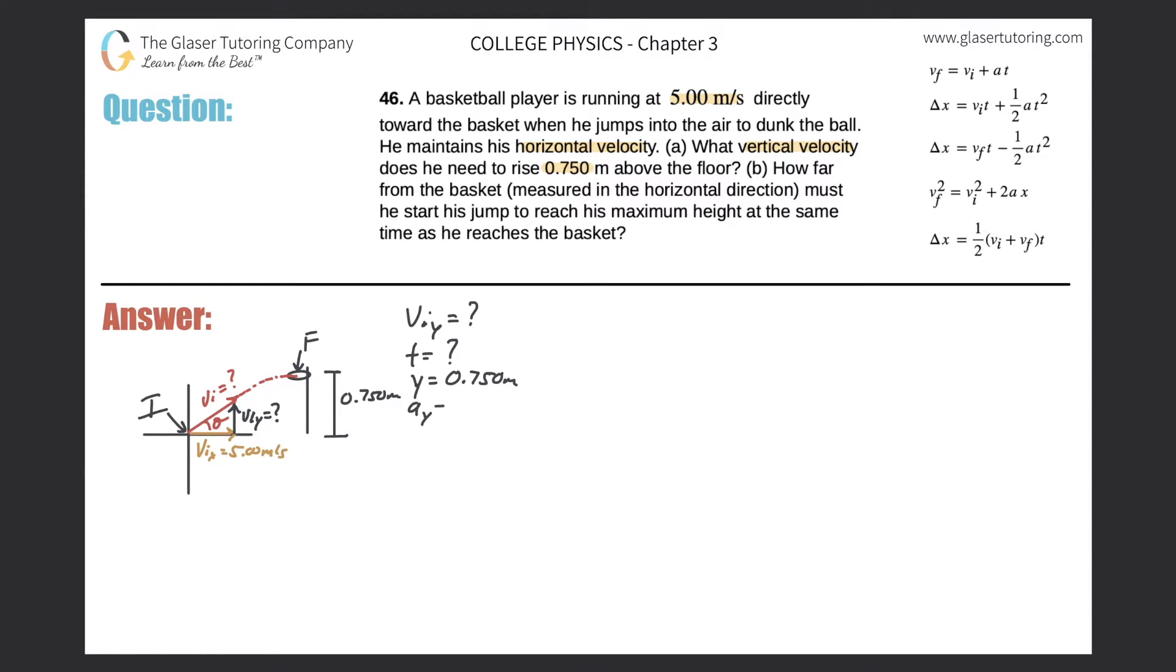Since he's jumping, it's a freefall problem essentially. Therefore, the acceleration is that due to gravity of negative 9.80 meters per second squared. And I also know most importantly that the final velocity in the y direction, being when he reaches the maximum height, should be 0 meters per second. That's the important idea here.